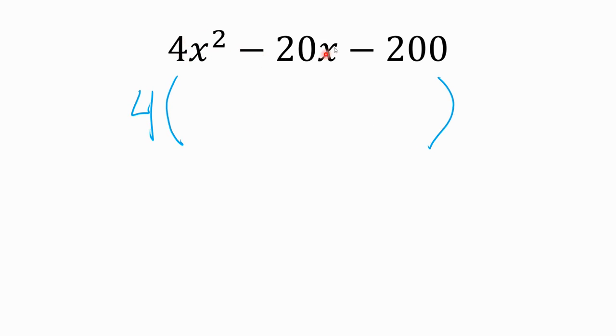So now ask, what's each of these divided by 4? This is just going to be 1x² or x². What's negative 20x divided by 4? That's negative 5x. What's negative 200 divided by 4? That's minus 50.